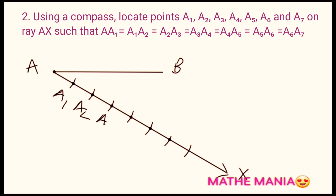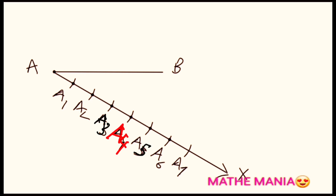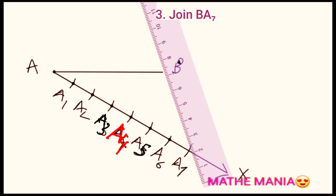You can observe that I have marked the fourth point with red color. This is because the first number of the ratio given to us is four, and this point plays an important role in our construction. Now we'll join the last point A7 to point B, and through A4 we have to draw a line parallel to A7B.